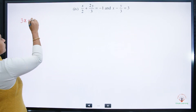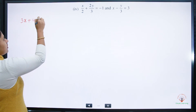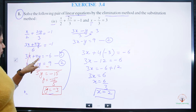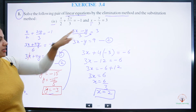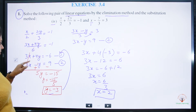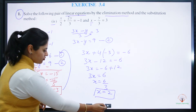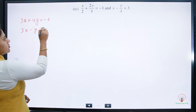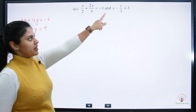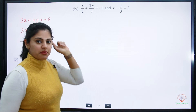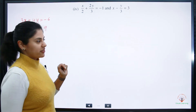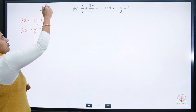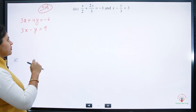Let us confirm our rearranged equations: equation 1 is 3x plus 4y equals minus 6, and equation 2 is 3x minus y equals 9. These are the same rearranged equations as before. If you missed the rearrangement, go back and review those steps. Now for the substitution method.